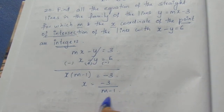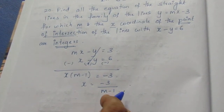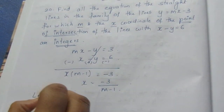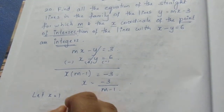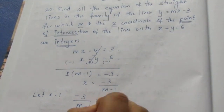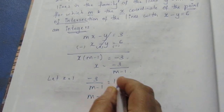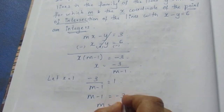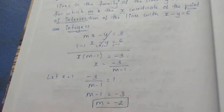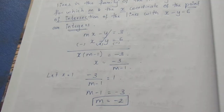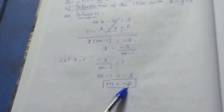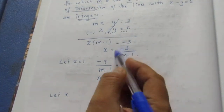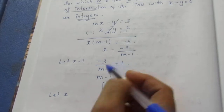We will use trial and error. Let x = 1. Then -3/(m - 1) = 1, so m - 1 = -3, giving m = -2. So x = 1 and m = -2 both satisfy the integer condition.